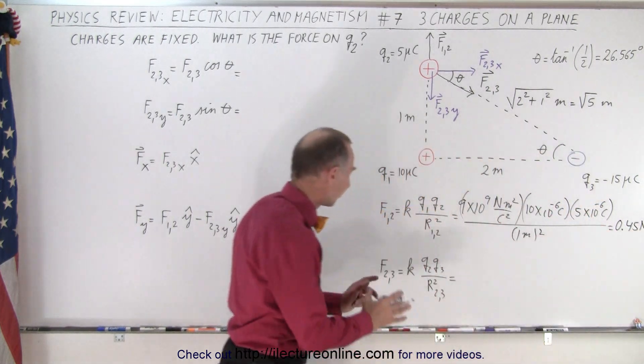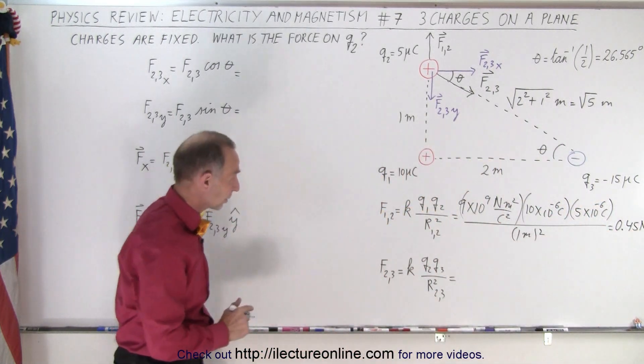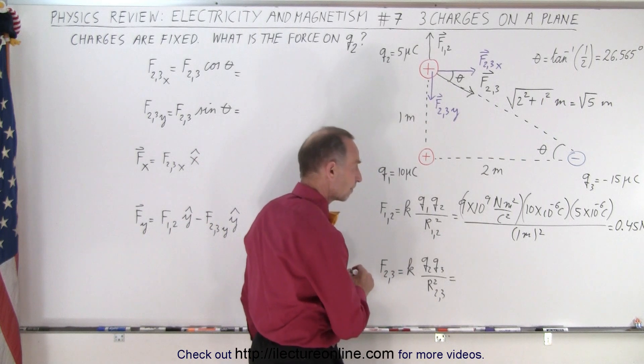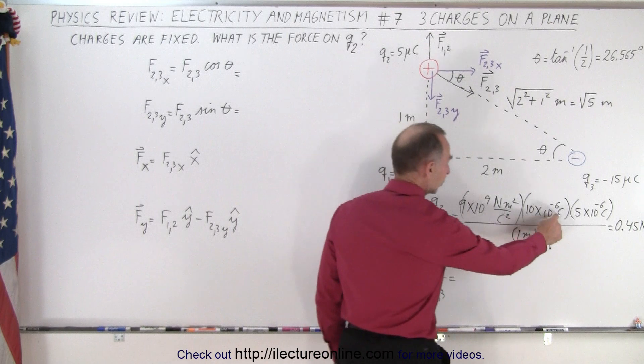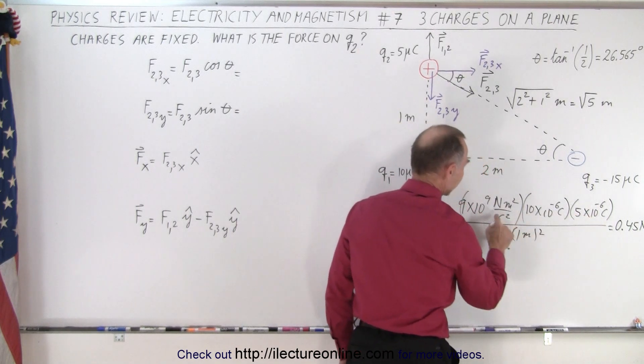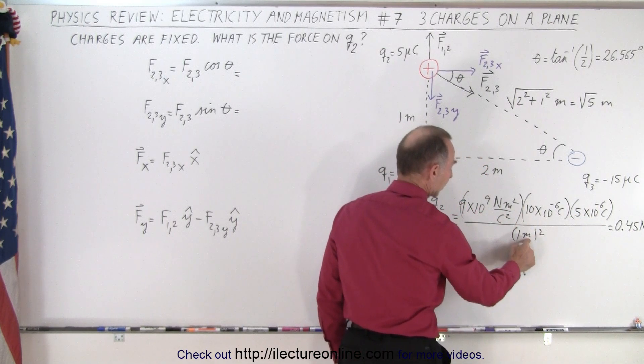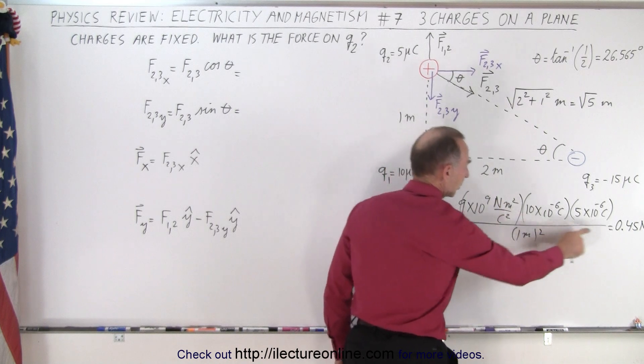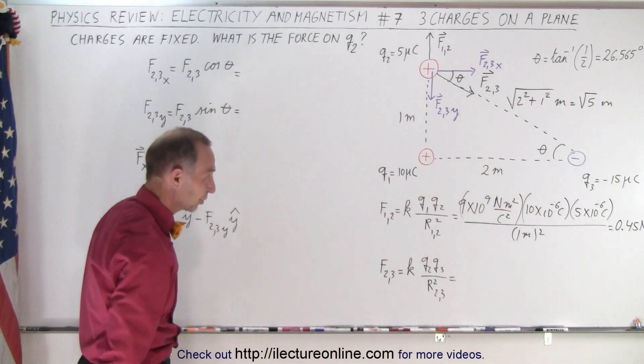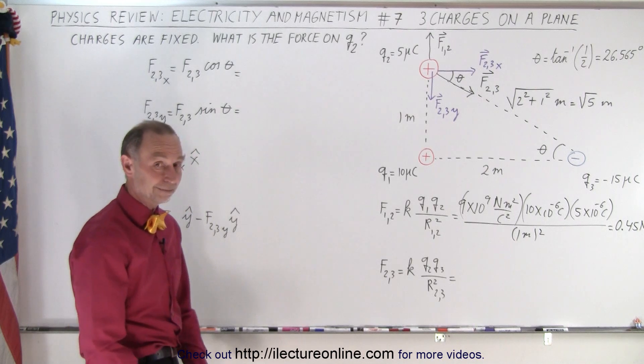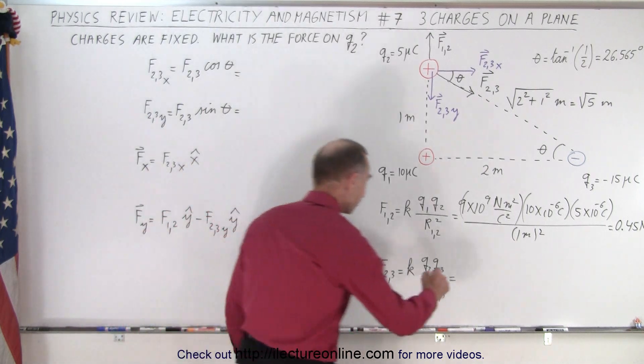All right, so we have the first magnitude. Now we need to find the second magnitude. Let's take a look at the units. So we have coulombs times coulombs, this coulombs squared cancels out with the coulombs here. Meter squared cancels out with the meter squared, and we end up with newtons right there. So it's always a good check to look at the units to make sure you did the problem correct.